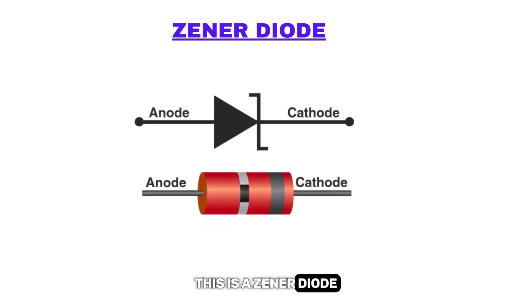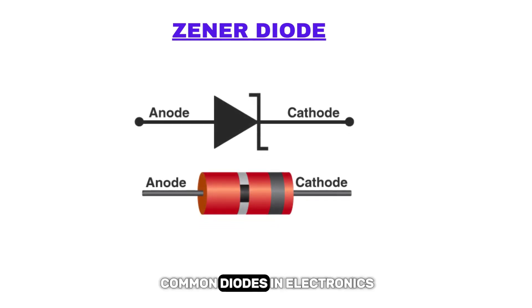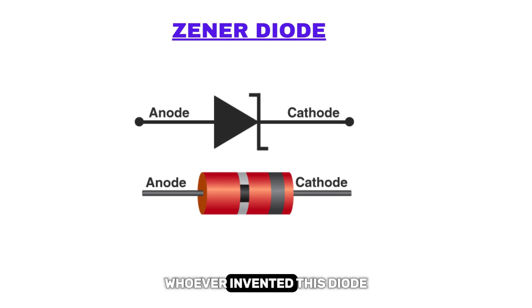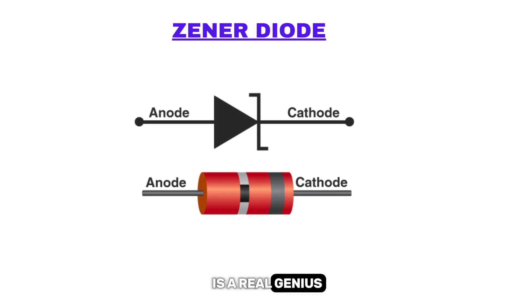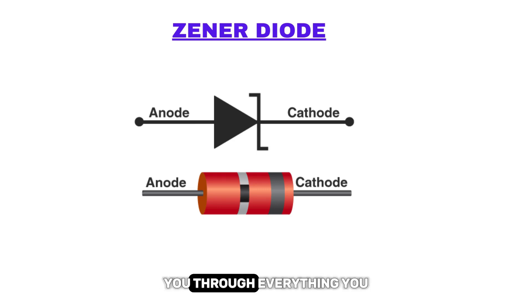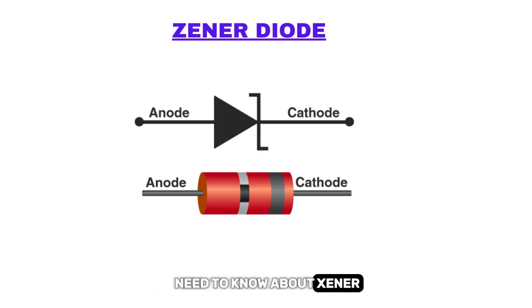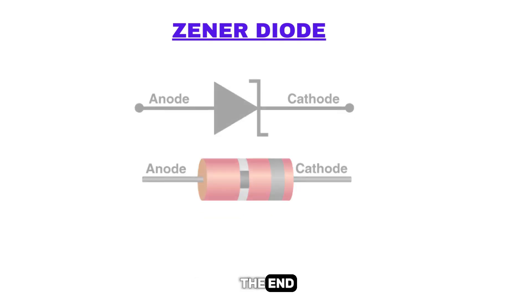This is a Zener diode, one of the most common diodes in electronics. Whoever invented this diode is a real genius. In this video, I'm going to walk you through everything you need to know about Zener, so stay tuned until the end.